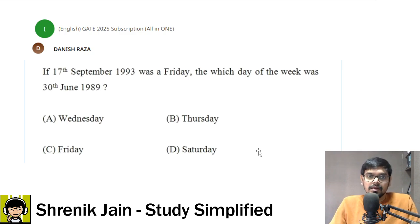The question is: If 17th September 1993 was a Friday, which day of the week was 30th June 1989? So basically you have to determine what day 30th June 1989 was - Wednesday, Thursday, Friday, or Saturday. Pause the video, try it yourself, then look at my solution.